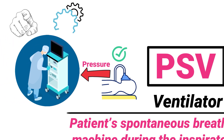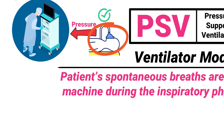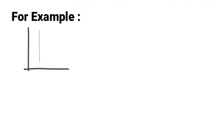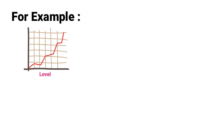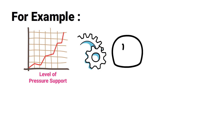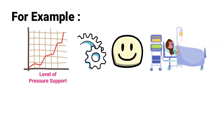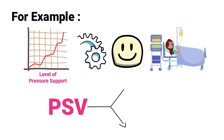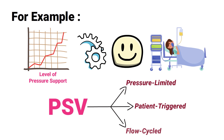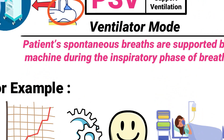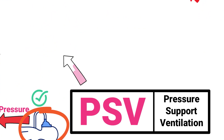For example, the higher the level of pressure support that is set, the easier it will be for the patient to take a breath. In other words, pressure support ventilation is pressure limited, patient triggered, and flow cycled.